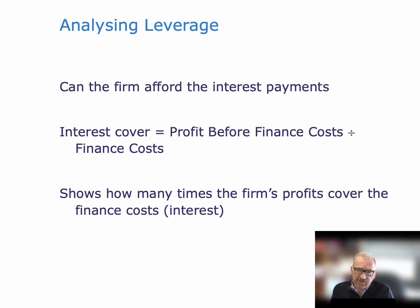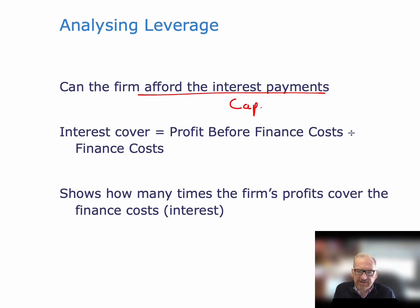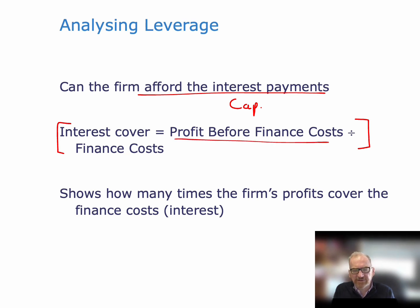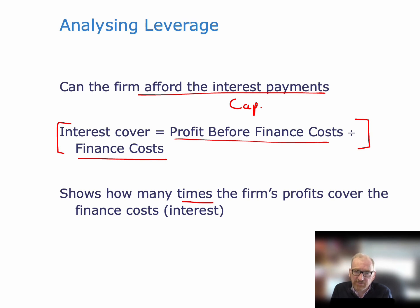When we analyze leverage, our main concern is: can the firm afford the interest payments and indeed the capital payments as well? Can it pay the debt back over the agreed time? We also use a measure called the interest cover ratio. That takes the profit before finance costs divided by finance costs, and it gives you an answer in times. So it tells you that your profits are, say, five or six times interest, which means your profits would have to fall a lot before you wouldn't be able to meet those interest payments.